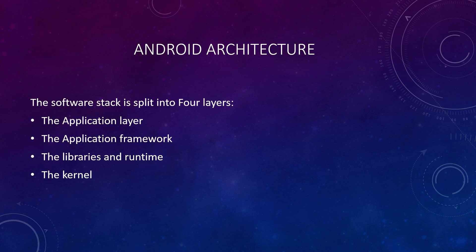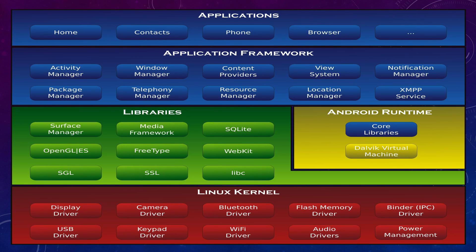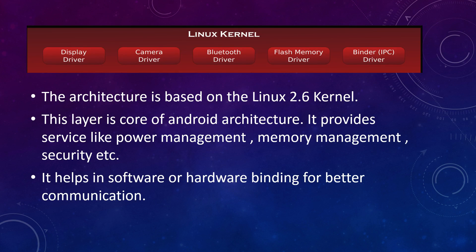Now comes the Android architecture, which my team member will explain. Architecture is one of the most important requirements for any operating system. Android architecture is a software stack split into four layers: the application layer, the application framework, the libraries and runtime, and the Linux kernel. The bottom-most layer is the Linux kernel, which contains display, camera, Bluetooth, flash memory, and binder drivers. It is based on the Linux 2.6 kernel and provides services like power management, memory management, and security, helping in software-hardware binding for better communication.